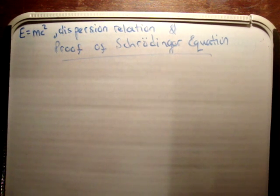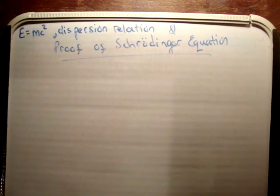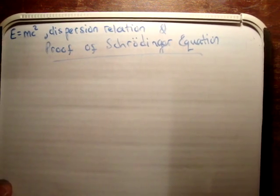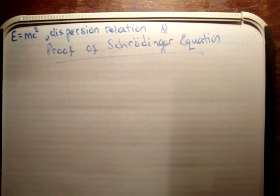In this video I'm going to prove Schrödinger's equation using E equals mc squared and the dispersion relation. I've done a video very similar to this in the past — this is just another way of doing it, essentially the same thing. I'm going to move through this very quickly.